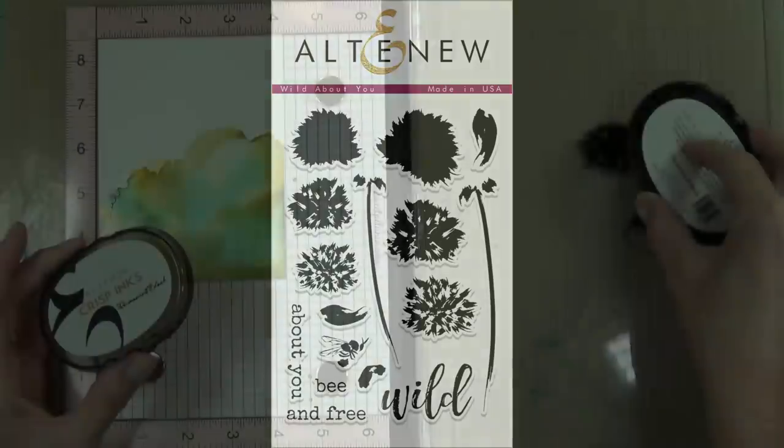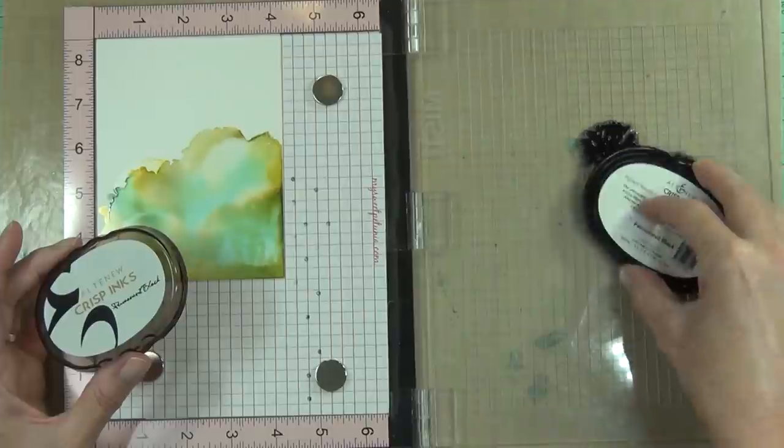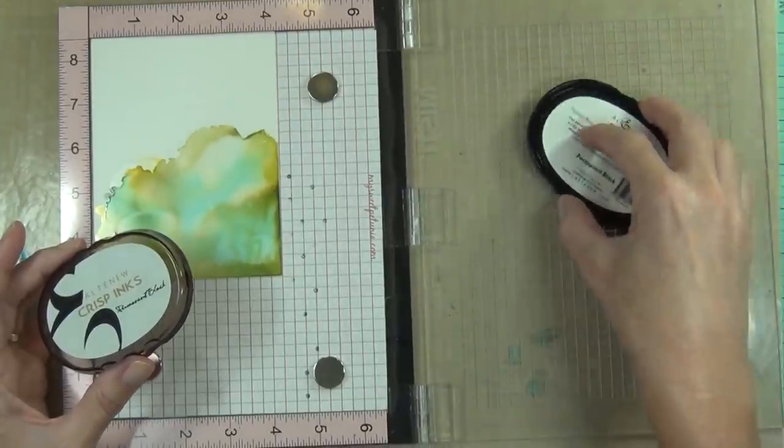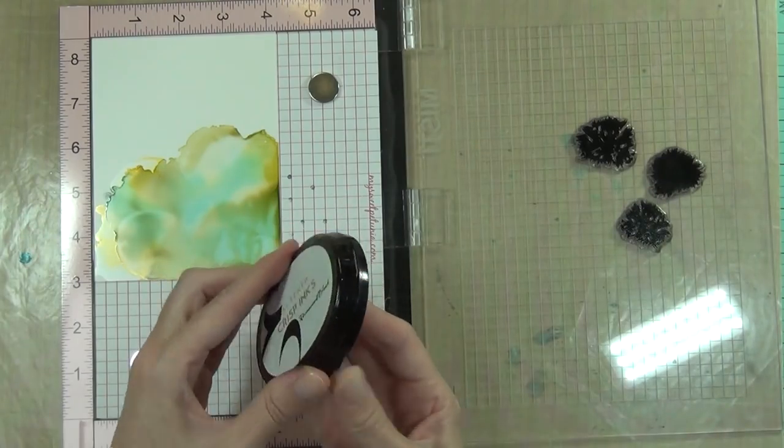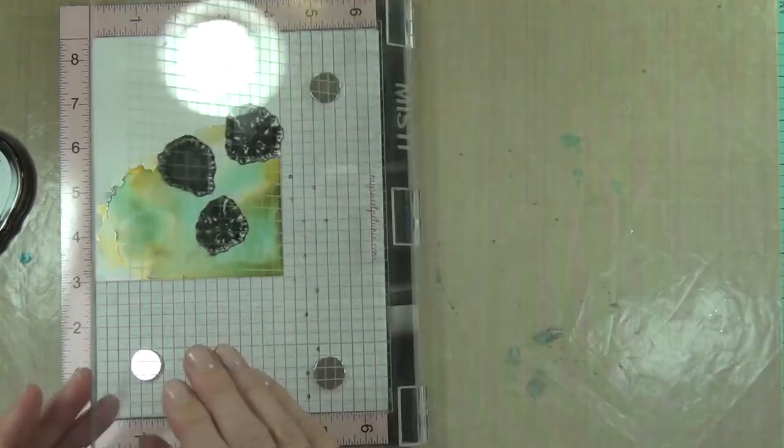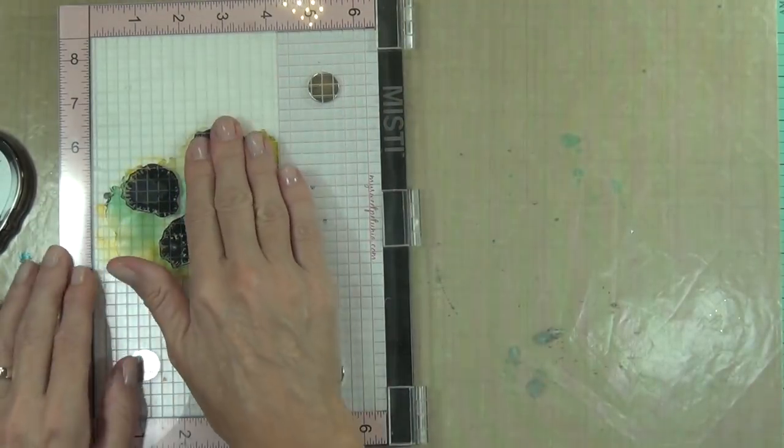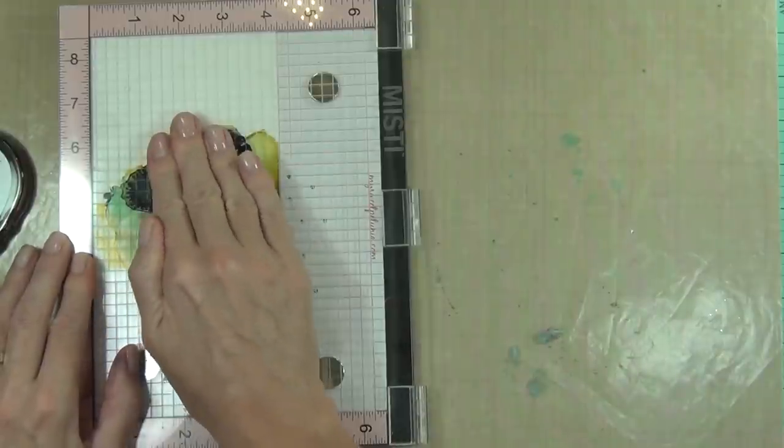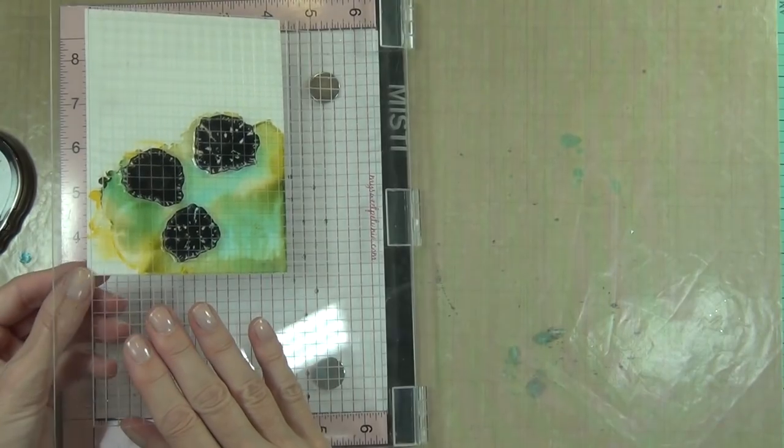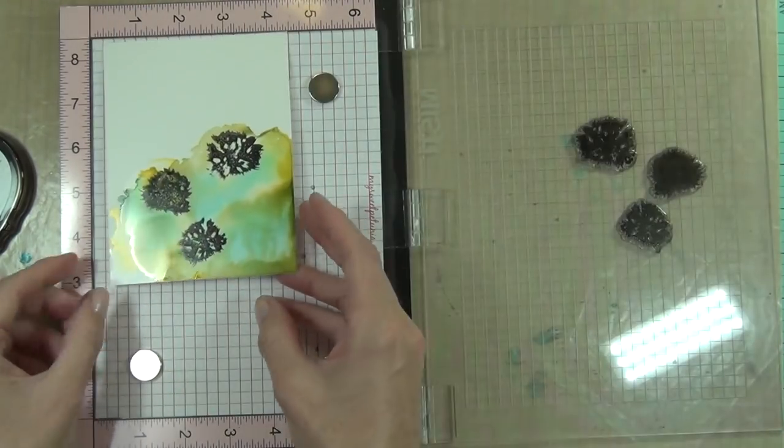This is a layering stamp set but I want to use it as a silhouette image, so I've chosen both a solid and one of the more shaded color, one not so solid image. I'm using the permanent black here from Altenew which is a permanent ink.